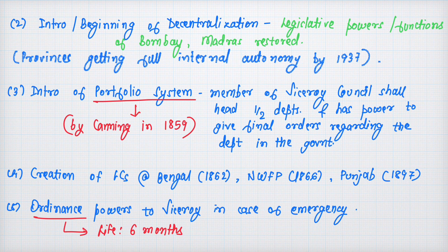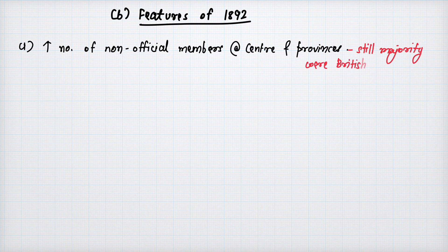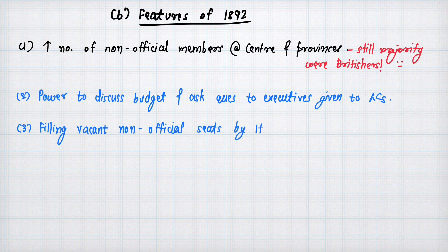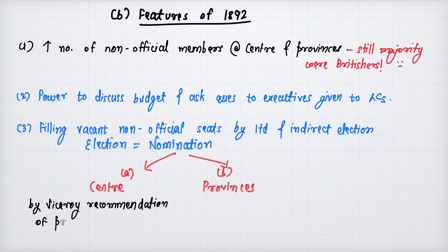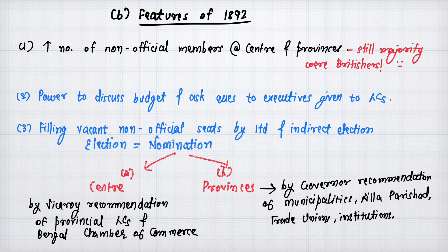Features of Indian Councils Act 1892: There was an increase in the number of non-official members at the center and provinces, but the British majority was maintained. Power to discuss the budget and ask questions was given to the legislative council. Filling vacant non-official seats was now done by limited and indirect election. For the central legislative council, nominations were made on the Viceroy's recommendation — considering Bengal Chamber of Commerce, municipalities, Zilla Parishads, trade unions, and other institutions.